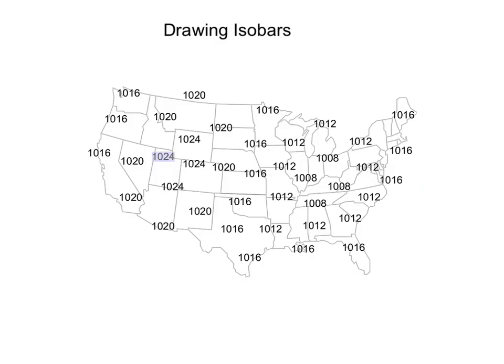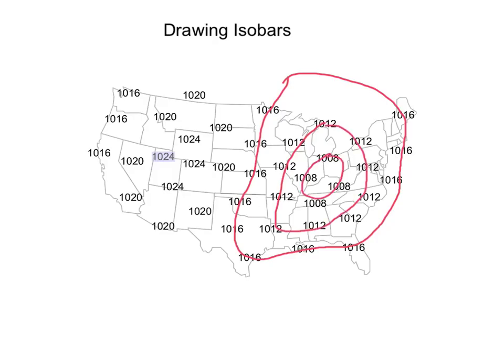In order to draw the isobars, you are going to play a connect-the-dots game. Typically when we're drawing isobars, we draw lines around four millibar increments. So I'm going to start with the 1,016 and draw my line connecting all the 1,016s. If I'm going down in increments of four, then I'm going to do the 1,012s next, and then finally the 1,008s.